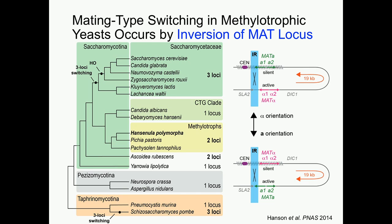In this top example, you have an alpha cell. Mating type is switched when recombination occurs between the inverted repeats, flipping the entire region around, displacing which genes are active and which are repressed, and giving you a change in mating type.